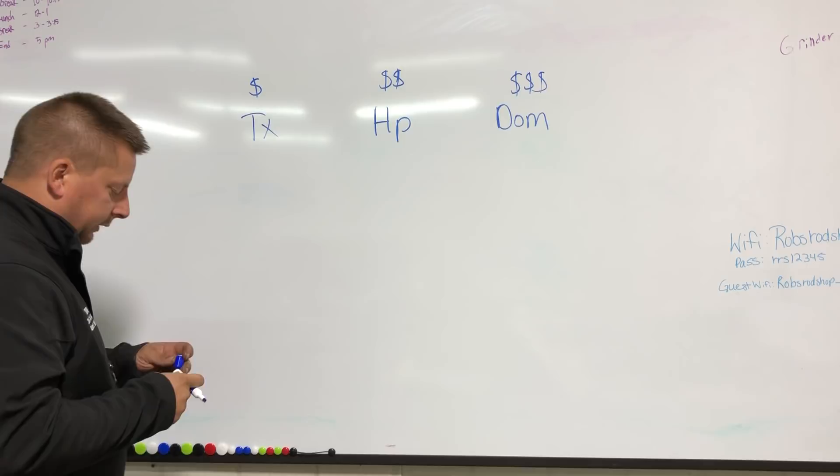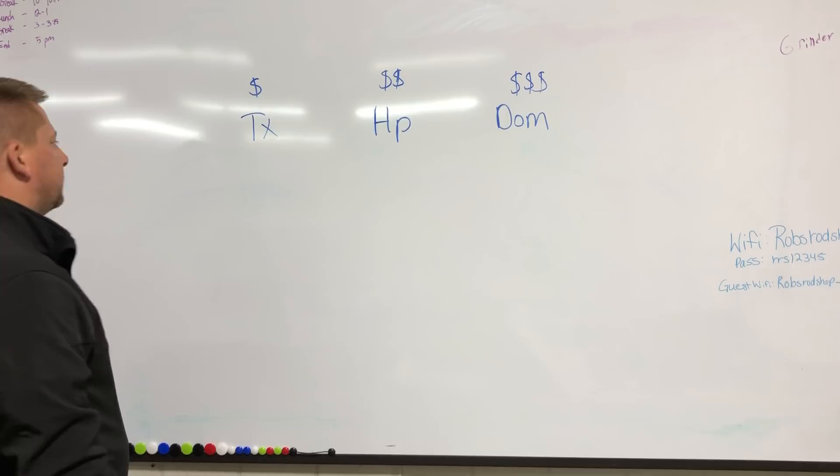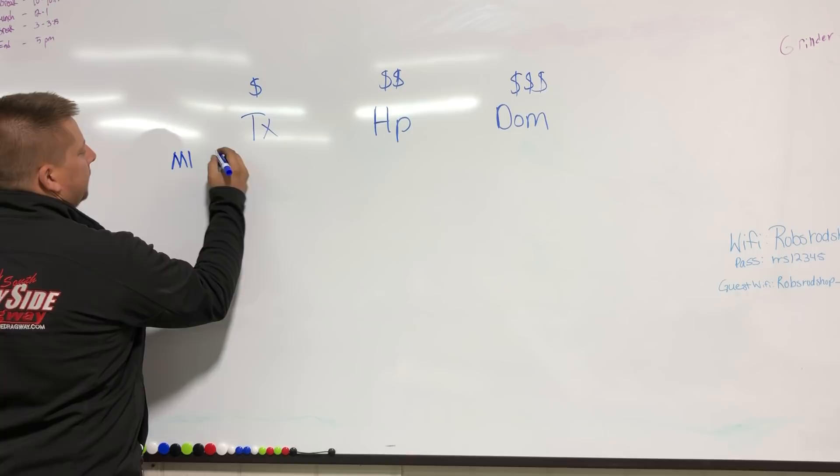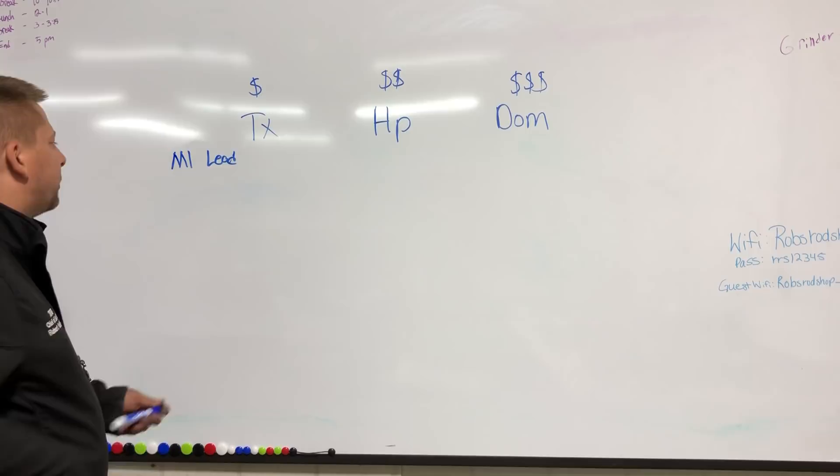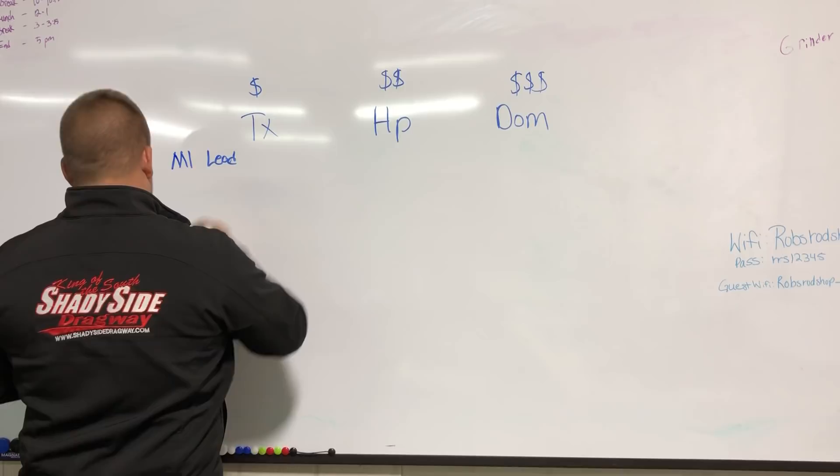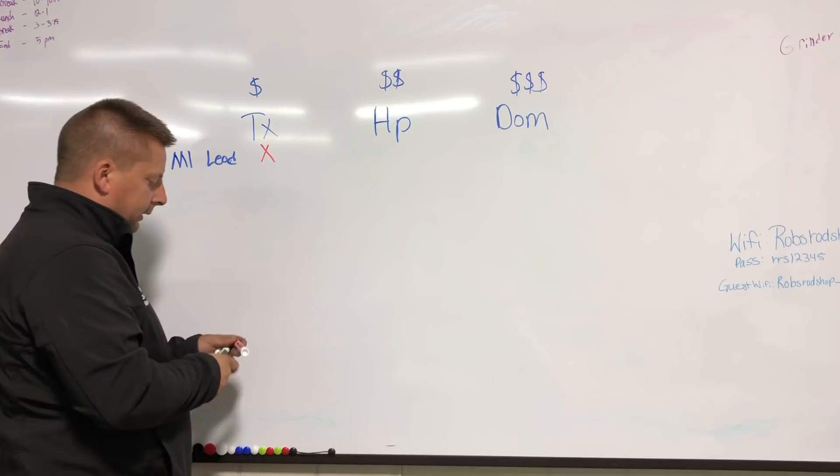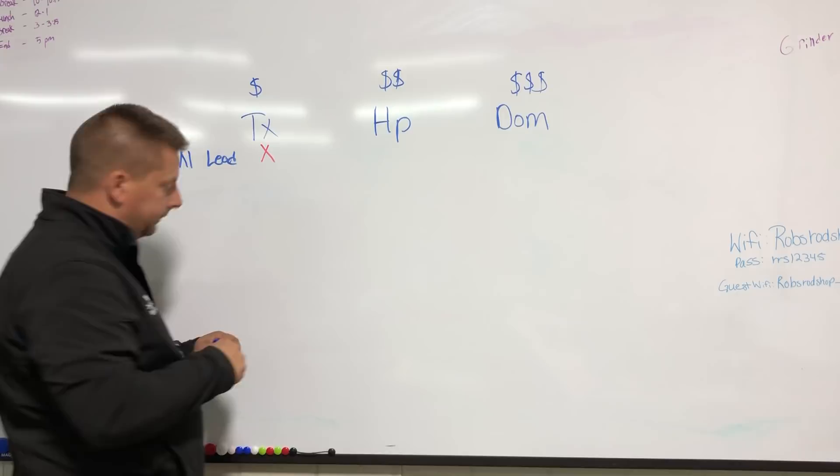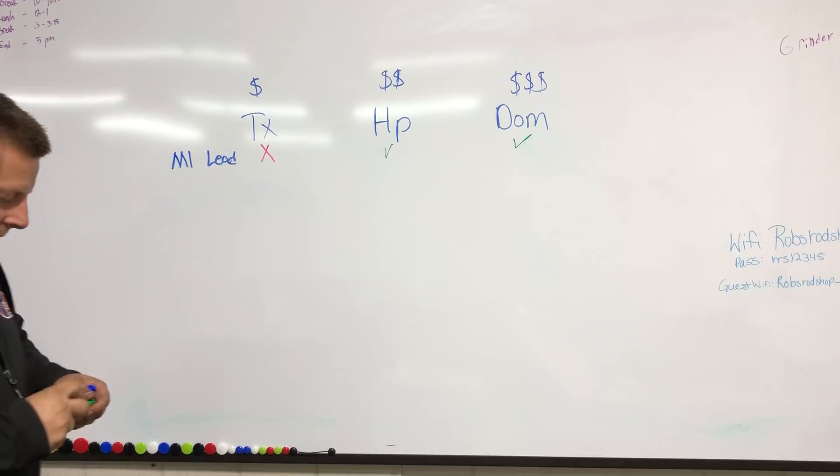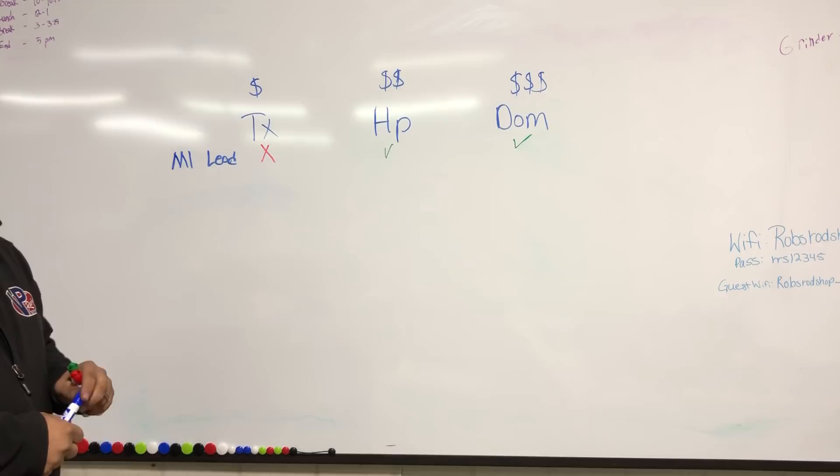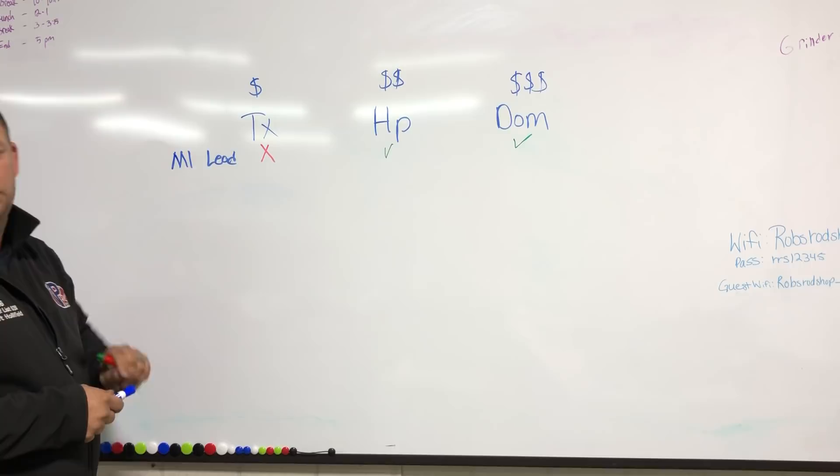But the first question that I ask when trying to decide what Holley EFI system is right for a customer is what fuel is it going to be on? If it's going to be on M1 or a leaded fuel, then the Terminator X is not the right option. The Terminator X comes with an O2 sensor that, in my personal opinion, is really susceptible to failure with leaded fuels, and it will not read M1. The Dominator and the HP both have the option of an NTK O2 sensor, which will do M1 and is not susceptible to failure with leaded fuels.